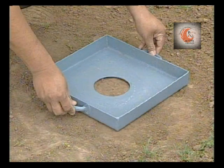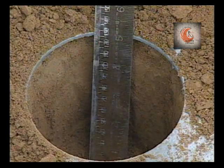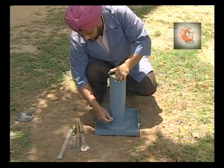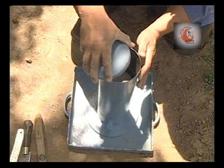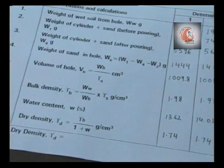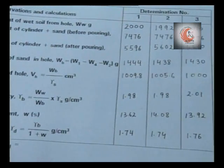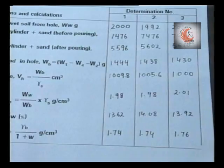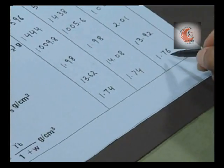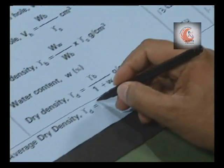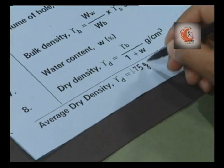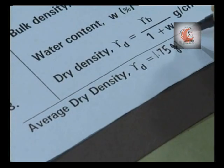Repeat the field operations in the same area at different places to obtain average results. Record all the observations in the pro forma. The average dry density of the three values recorded is 1.755 grams per centimeter cube.